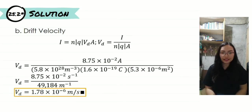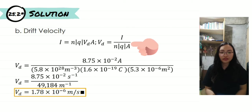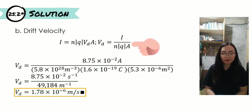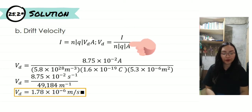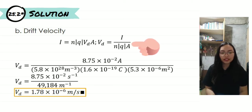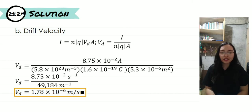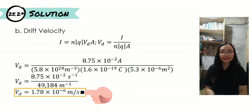Next is our drift velocity. In order to find the drift velocity, we need to use the equation I is equal to N multiplied by Q multiplied by V sub D multiplied by A. N is the number of electrons per cubic meter, Q is the charge of the electron, V sub D is our drift velocity, and A is our area. Since we are asked to find the drift velocity, we need to manipulate the equation, giving us V sub D is equal to I all over N multiplied by Q multiplied by A. By substituting everything in the equation, we will obtain our drift velocity, which is equal to 1.78 times 10 to the negative 6 meters per second.